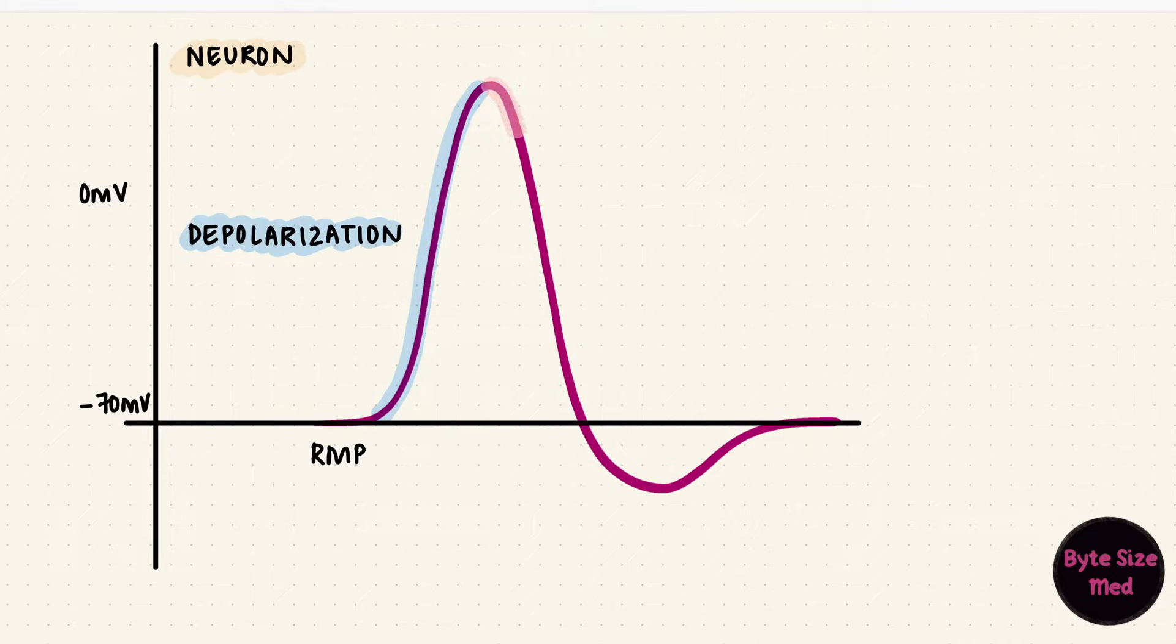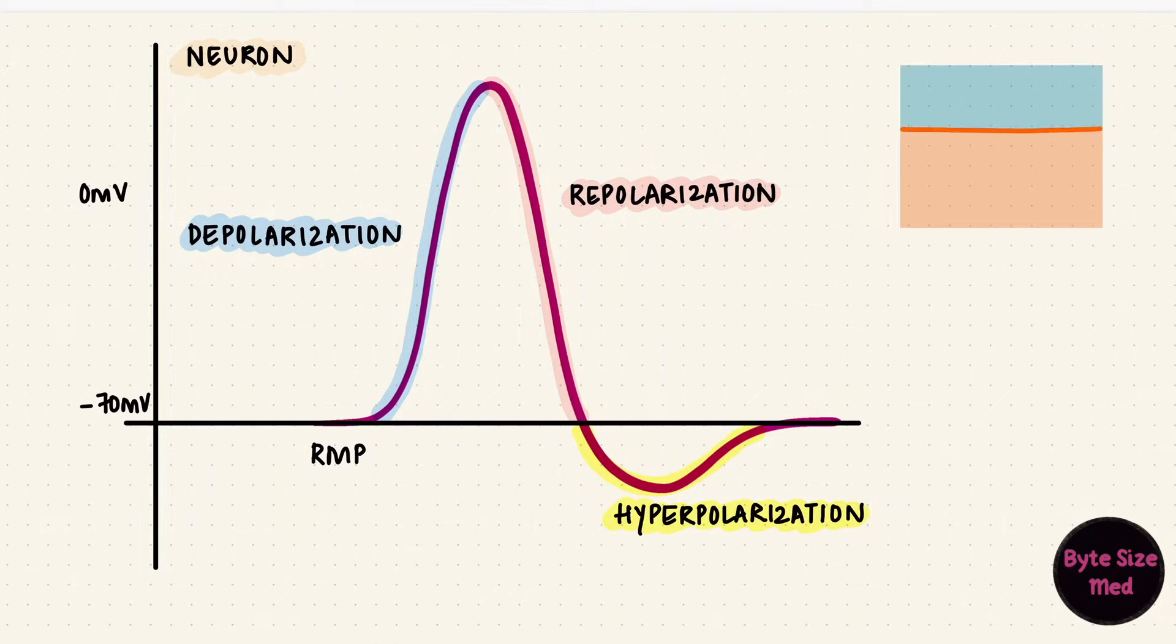When it returns to the original negativity, that's repolarization. And if it becomes more negative than that, it's called hyperpolarization. In a neuron, these three phases are mainly caused by the movement of sodium and potassium.